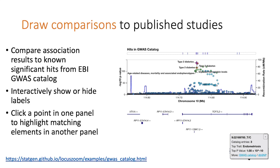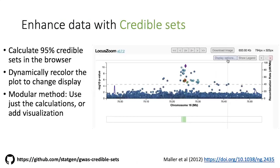The new GWAS catalog feature allows you to see how significant findings in your study relate to claims of biological significance from all other known studies. For the next section, we've been looking at not just comparing to known research but adding new information on the fly. I'm going to turn it over to my colleague Ryan, who's going to tell you about some of our interactive analysis features.